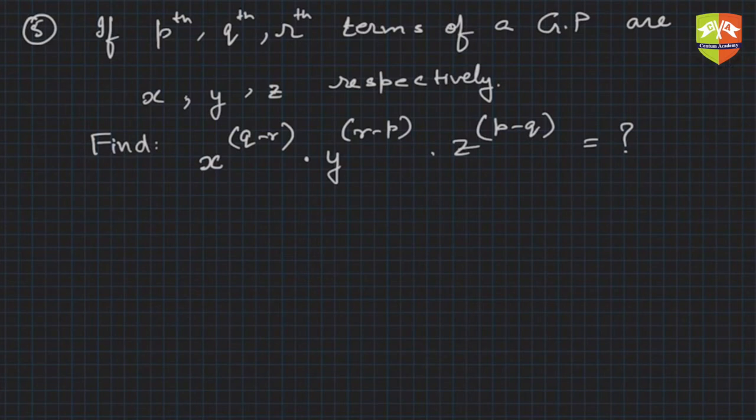If p-th, q-th, r-th terms of a GP are x, y, z respectively, find x to the power (q minus r), y to the power (r minus p), z to the power (p minus q). x is equal to a, let's say capital R is the ratio because small r is given. So x equals a times R to the power (p minus 1).